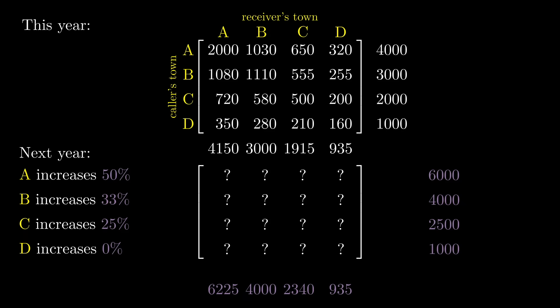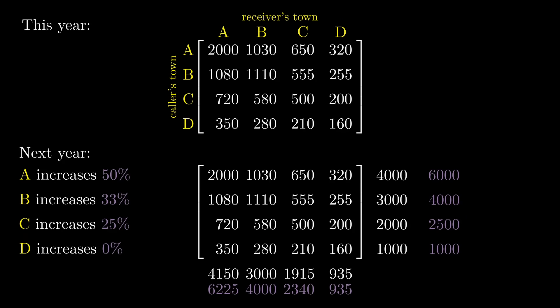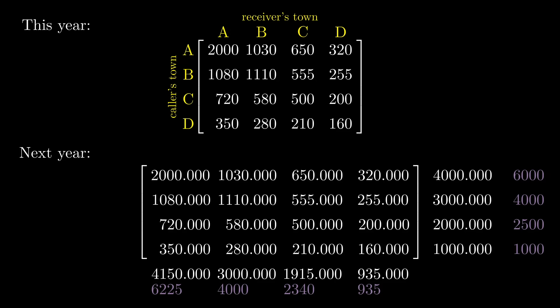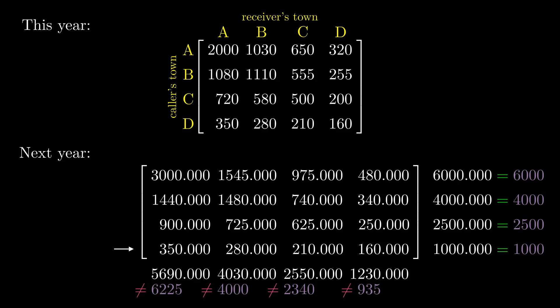Here's Krauthoff's method. We start by approximating next year's traffic data with this year's traffic data, since they should be closely related. Let's increase the precision to make things more interesting. We have to fix the row and column sums, though, because for the most part, they don't match the projected numbers. We fix the first row sum by scaling the first row. The row sum is 4,000, but it should be 6,000, so we multiply each entry by 6,000 over 4,000. For the second row, we multiply by 4,000 over 3,000, the third row by 2,500 over 2,000, and the fourth row by 1,000 over 1,000. Now, the number of outgoing calls from each town matches the projection.